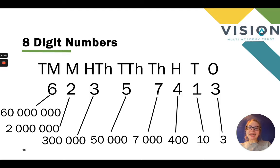So looking at eight digit numbers. This is taking children all the way up to the tens millions. We've got the number 62,357,413 on here. As I've done previously, I've put the place value headings above and worked out the values underneath.